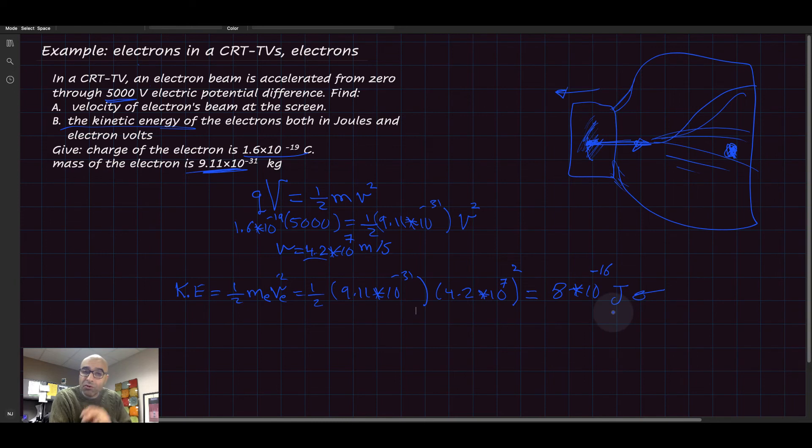The electron volt is a measure of energy that comes in handy in these situations. For example, 1 electron volt equals 1.6 times 10 to the minus 19 joules.